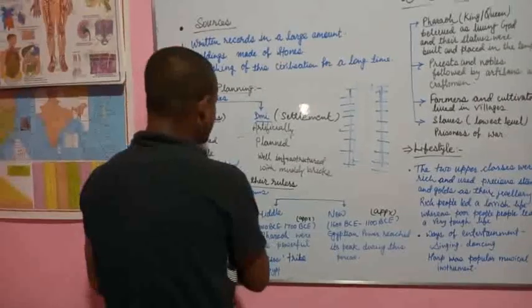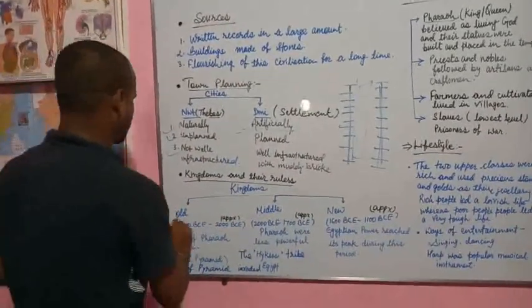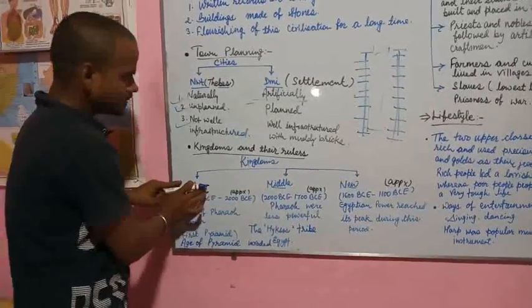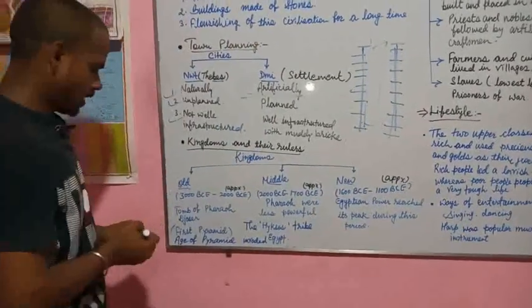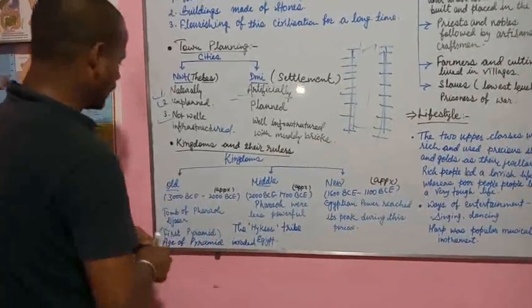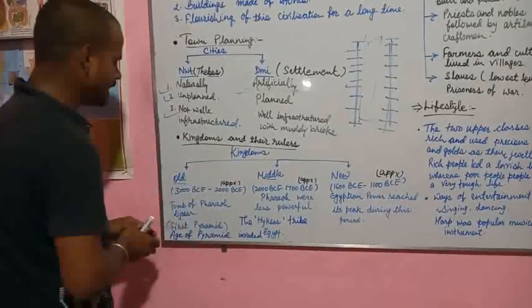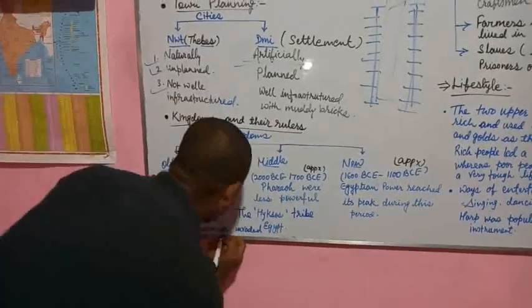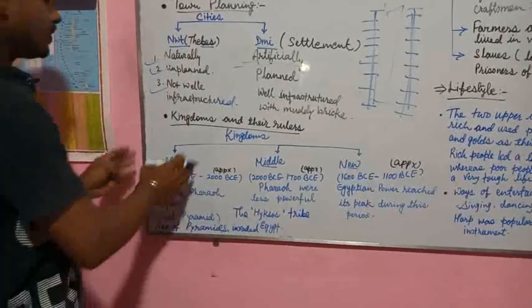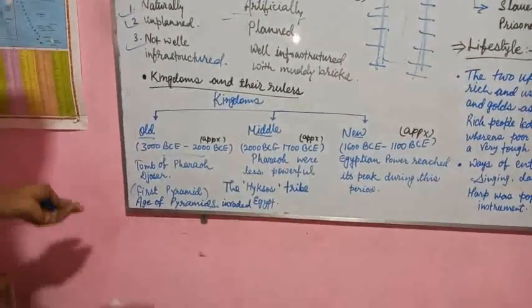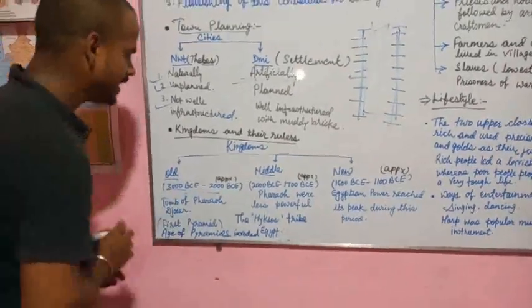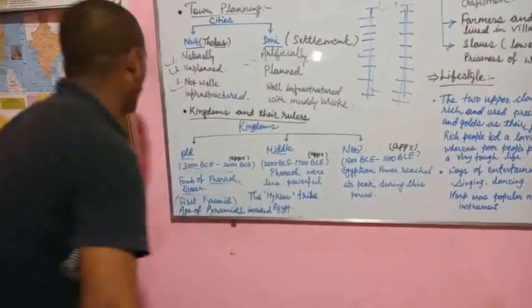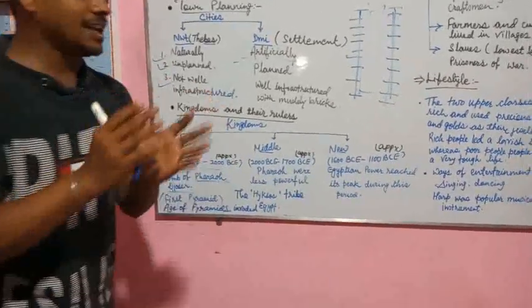Now come to kingdoms and their rulers. Kingdoms were divided into three stages. Old Kingdom, around 3000 BCE to 2000 BCE, was called the age of pyramids. Egyptians started building pyramids in this old kingdom. This was the time of pharaoh Djoser, whose tomb was built in this old kingdom.